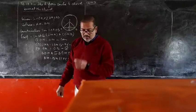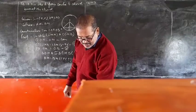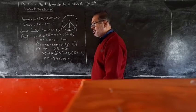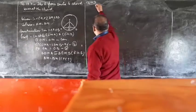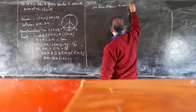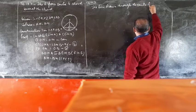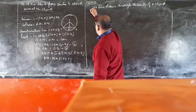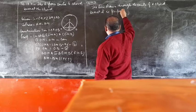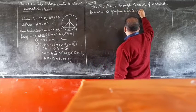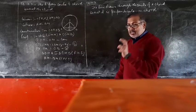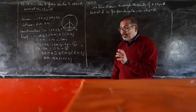Now here is the converse statement for this theorem: the line drawn through the center of a circle to bisect a chord is perpendicular to the chord. From this statement we will transform it into pictorial form.